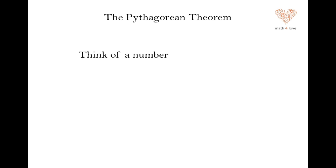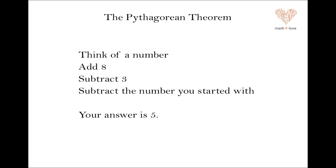So here's a little game. Think of a number, let's say between one and ten, but it could be any number. Add eight, subtract three, and then subtract that original number you started with. Your answer is five.